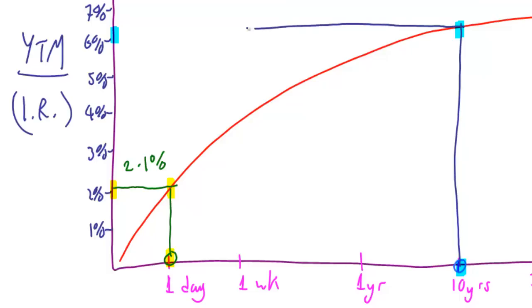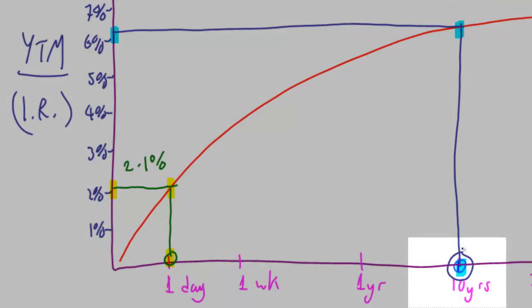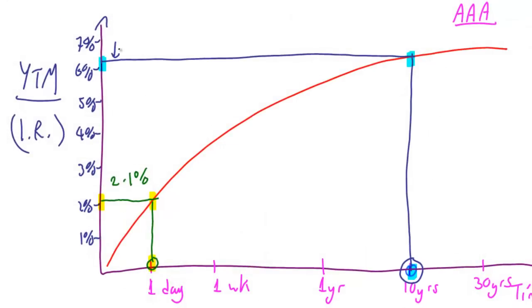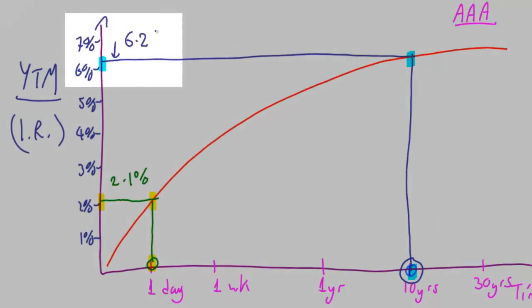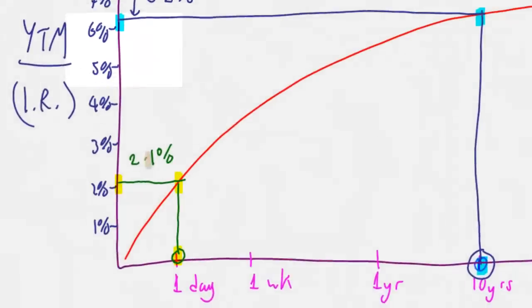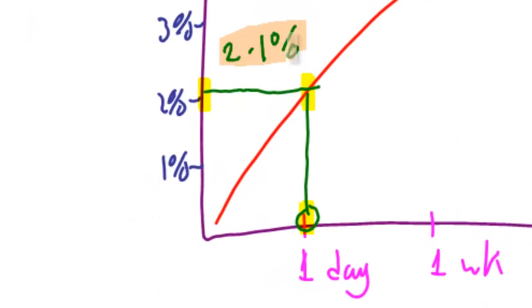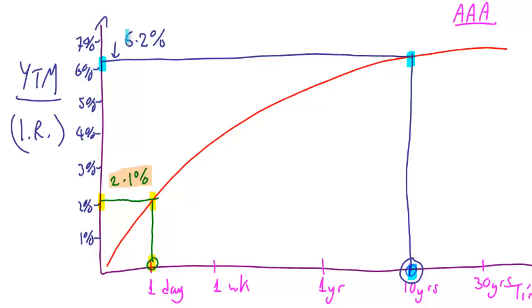And then we go across to there. And what that means is if you want to borrow money from me for 10 years, you're going to have to pay, I reckon, that's about 6.2%.